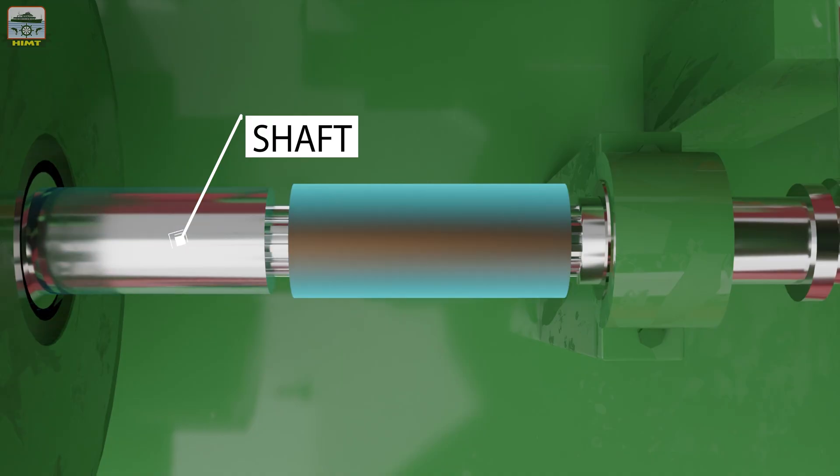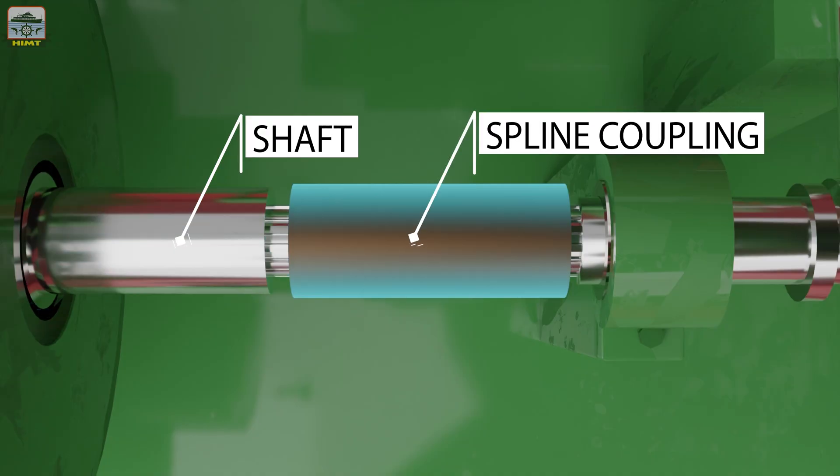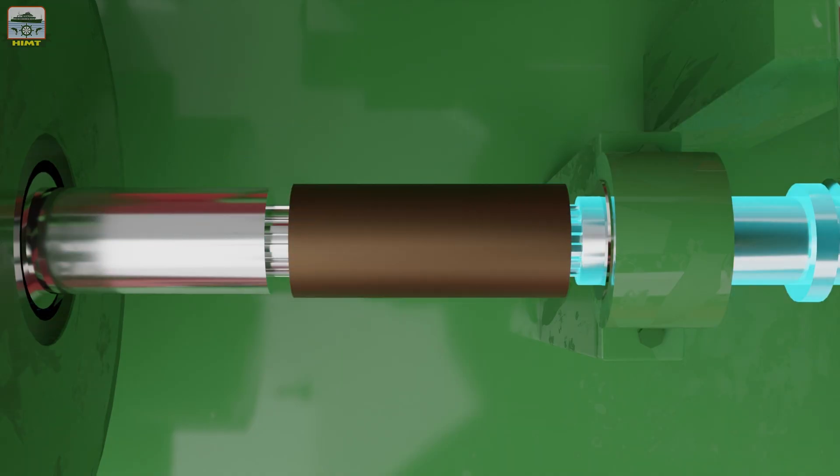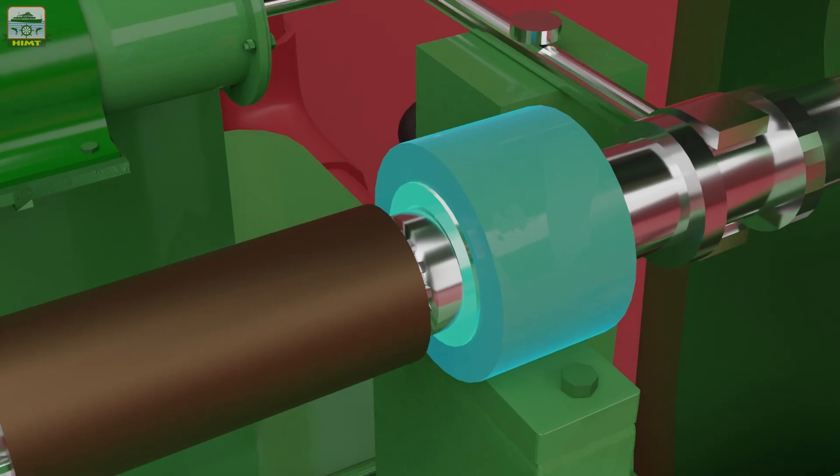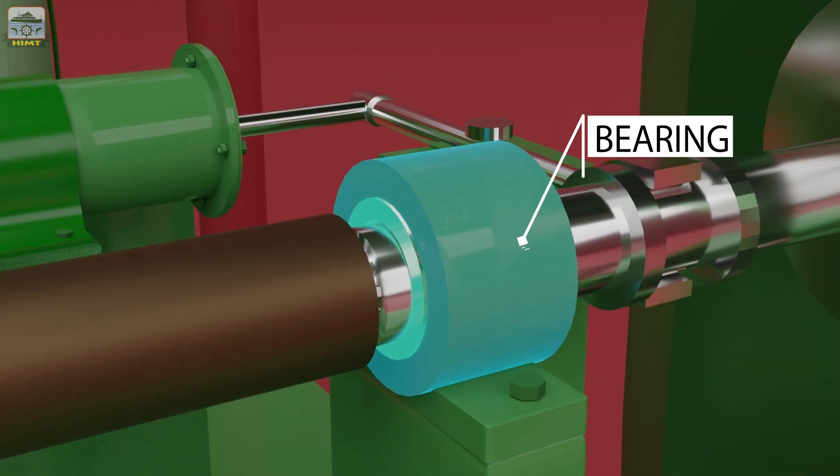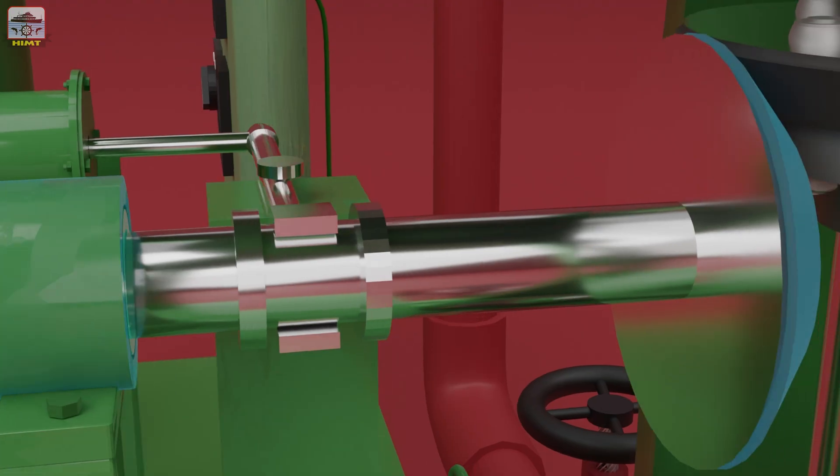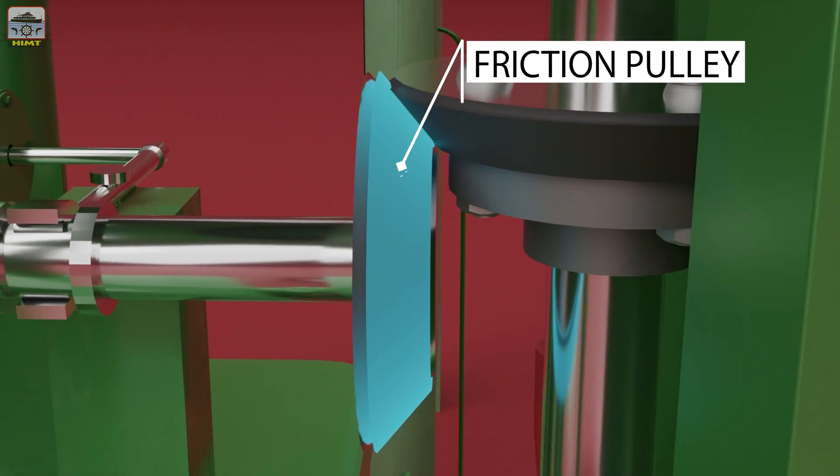The pump shaft is spline coupled to another shaft. This shaft has a friction pulley on the other side.